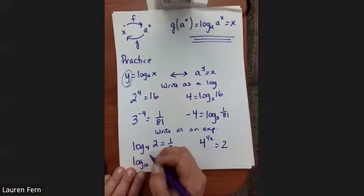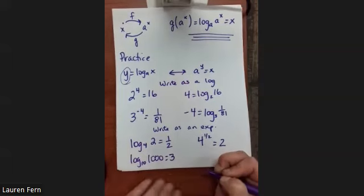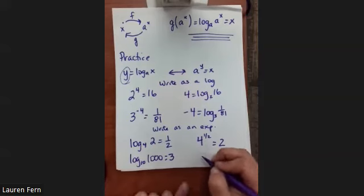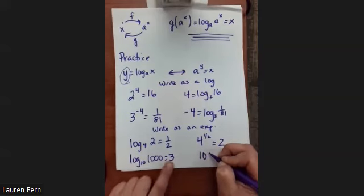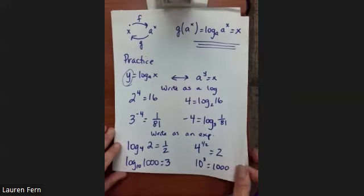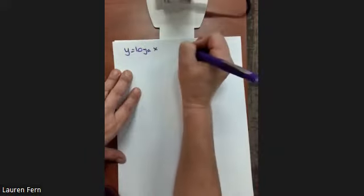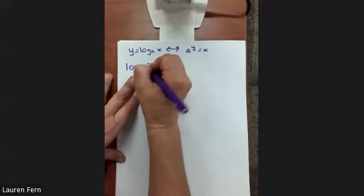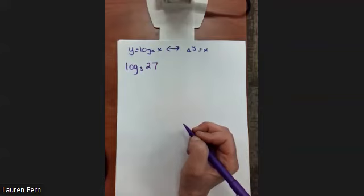How about log base 10 of 1,000 equals 3? Can we write that in equivalent exponential form? My base is 10: 10 raised to the third power is 1,000. Now, keeping this equivalence in mind — y = log base a of x means a^y = x — can we solve log base 3 of 27?